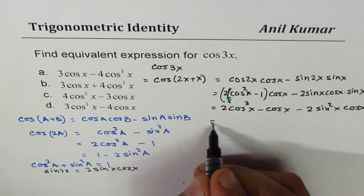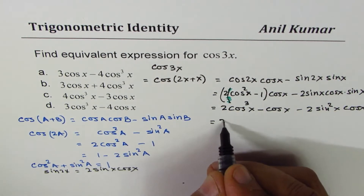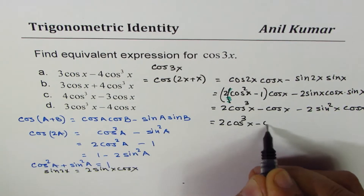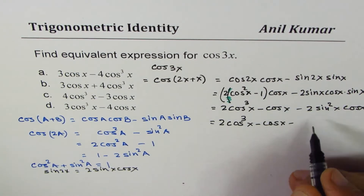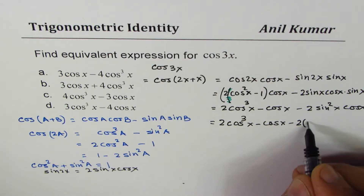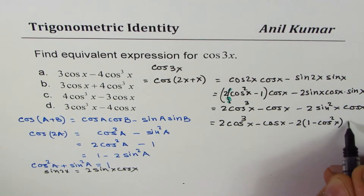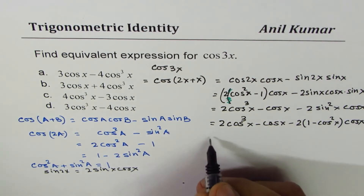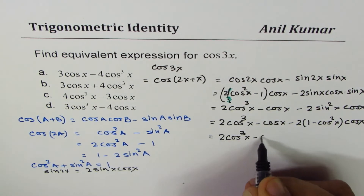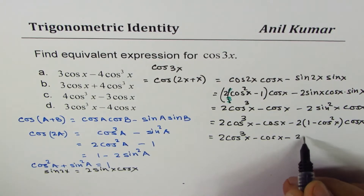sin² x can be written as 1 − cos² x, so we get 2 cos³ x − cos x − 2(1 − cos² x) · cos x. Opening the bracket, that gives 2 cos³ x − cos x − 2 cos x.